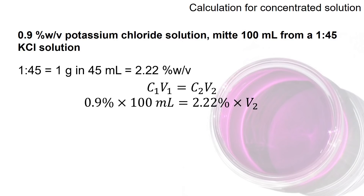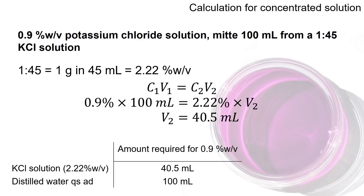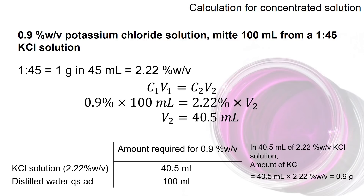Substituting into the equation: we need 100 ml of 0.9% potassium chloride solution taken from an unknown volume of 2.22% stock solution. You find that you actually need 40.5 ml of this stock solution, then top up the rest with distilled water. To verify: in 40.5 ml of 2.22% potassium chloride, the amount of potassium chloride equals 0.9 grams — matching the target of 0.9% w/v, since you have 0.9 grams in 100 ml.